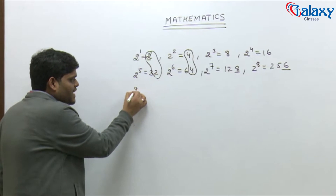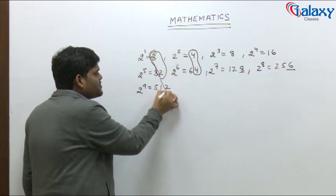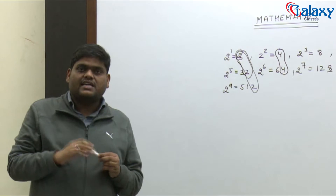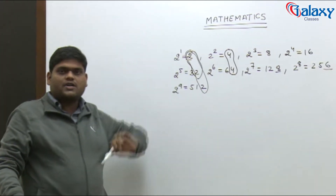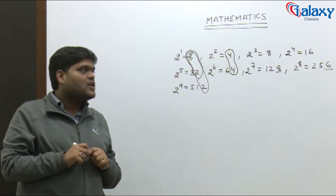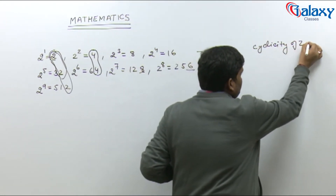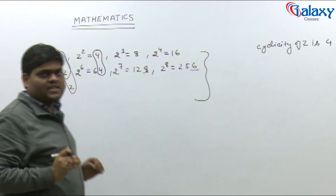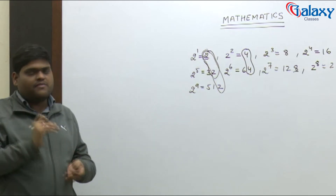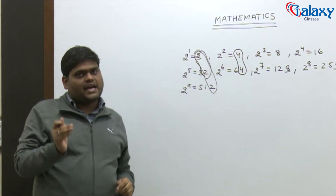As soon as we come to 2 to the power 9, which is 512, the unit digit starts repeating again. You can see that after every fourth power — at powers 4, 8, 12, 16 — the unit digit starts repeating itself. So we say that the cyclicity of 2 is 4. We have found the cyclicity of our first number.